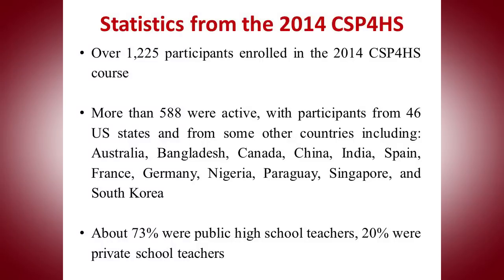The course this summer builds off of some of the content we provided in the 2014 instance. Last year we had over 1,225 participants enrolled in the course; 588 were active and we had participants from 46 states and several countries. We will be building upon last year's content in several ways, adding new activities, new content, and correcting some things that have changed about CS Principles, such as a new revision of the performance task and other content updates from the previous year.